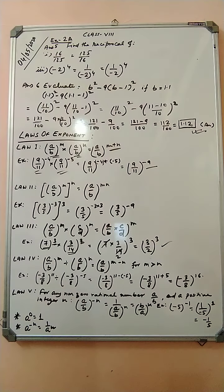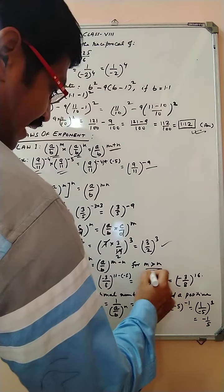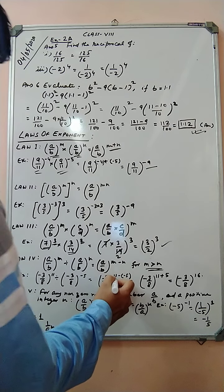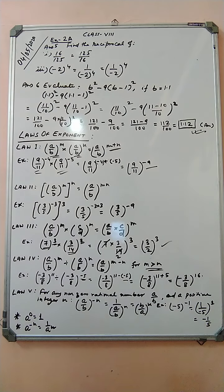Law 4: (a by b) to the power m divided by (a by b) to the power n equals (a by b) to the power m minus n, for m greater than n. Example: (minus 3 by 8) to the power 11 divided by (minus 3 by 8) to the power minus 5 equals (minus 3 by 8) to the power 11 minus (minus 5). Minus minus is plus, so 11 plus 5 equals 16, giving (minus 3 by 8) to the whole power 16.